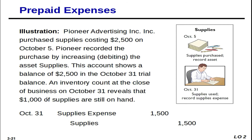In the October 31st trial balance, the balance shows $2,500 — the same as what was purchased on October 5th. But we used some of these supplies, so that balance is incorrect. An inventory count at the close of business on October 31st reveals that $1,000 of supplies are still on hand. So we must have used $2,500 minus $1,000 — we used $1,500.